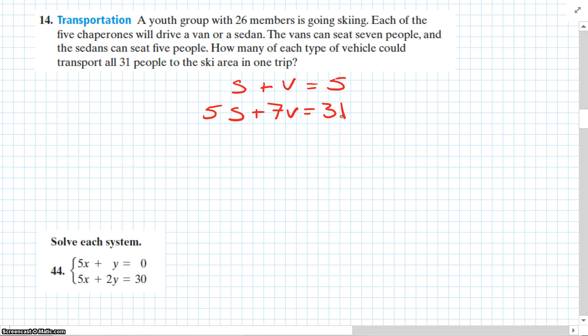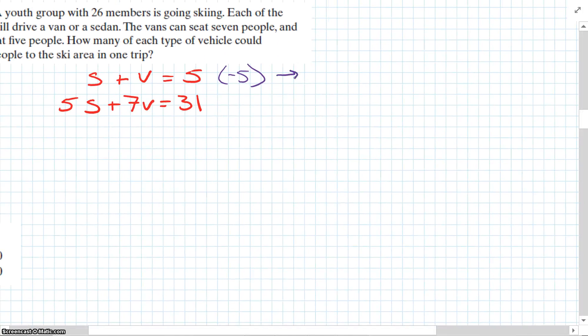So we have two equations right now and two variables. We could do it a few different ways. We could just substitute, or we could try to eliminate. So if we're going to eliminate, multiply the top equation by negative five. So that's going to get negative 5s, negative 5v, and negative 25. We're just going to move the second equation over and match it up: 5s + 7v = 31.